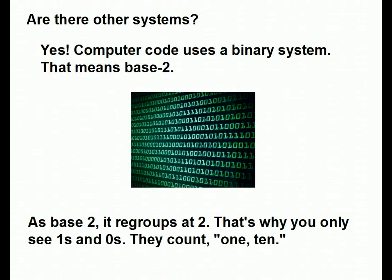Are there other systems? Well, yes. Computer code uses a binary system, which means it works in base 2 — it regroups at 2. That's why you're only looking at 1s and 0s; they actually count 1, 10. Just thought you'd find that interesting. We'll be working with base 10, because that's our number system from now on.